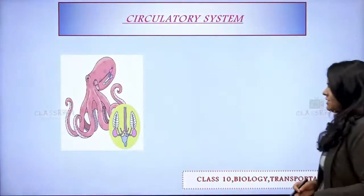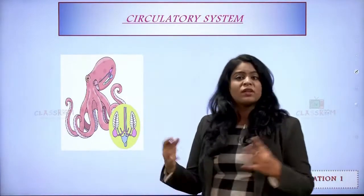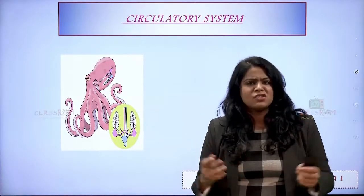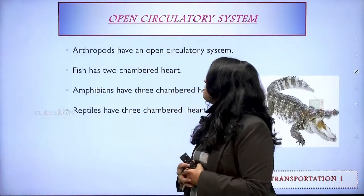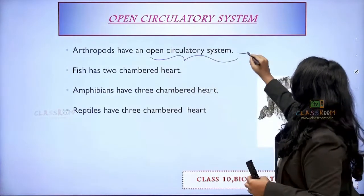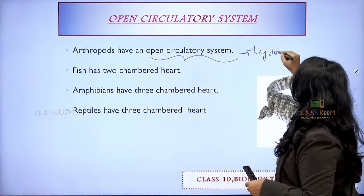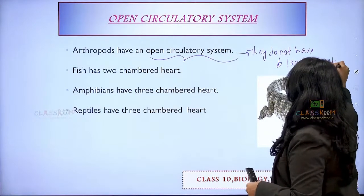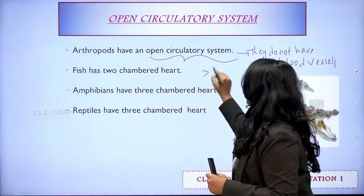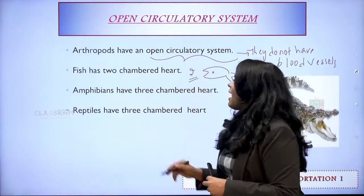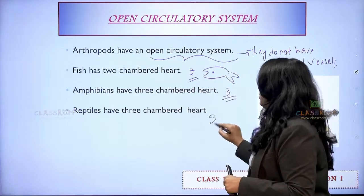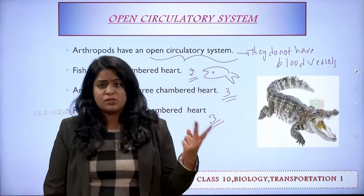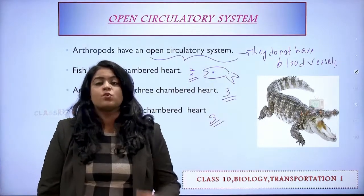Something interesting: there are some animals that have more than one heart. Octopus has eight hearts, while we have only one. Arthropods have open type of circulatory system — they do not have blood vessels. Fish has a two-chambered heart. Amphibians and reptiles also have three-chambered hearts. So if someone asks whether all animals have just one heart, that's not true — some have two hearts, some have three, some have eight.